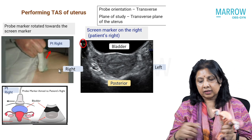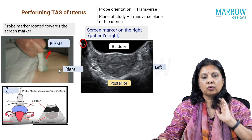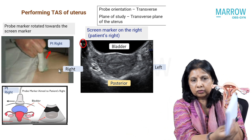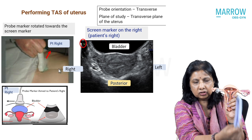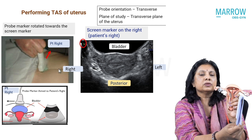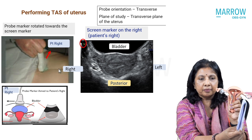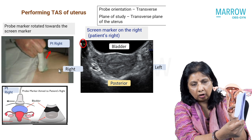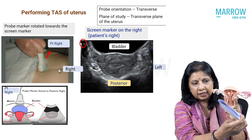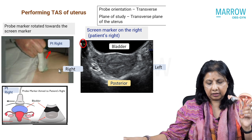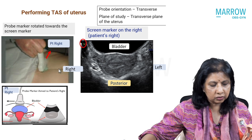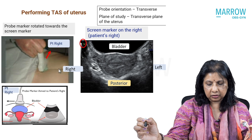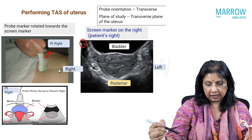Now let's look at the transverse plane of the uterus. So what do I do in a transverse plane? This is my sagittal — this is my uterus, this is my probe held sagittally. For the transverse plane, I will rotate my probe so that the probe marker is always on top, rotated towards the side of the screen marker. When I do that, as you can see from these images, the probe marker is facing the patient's right.